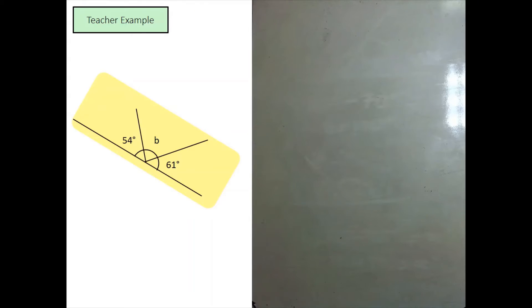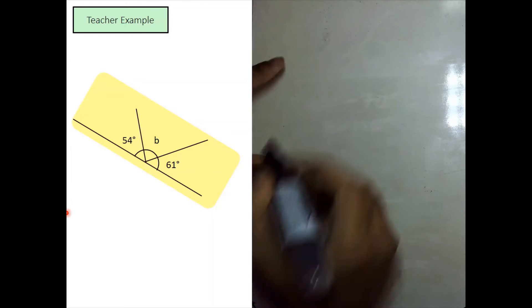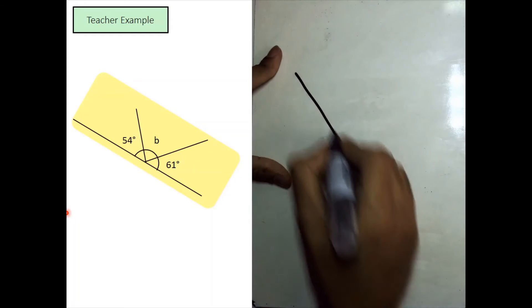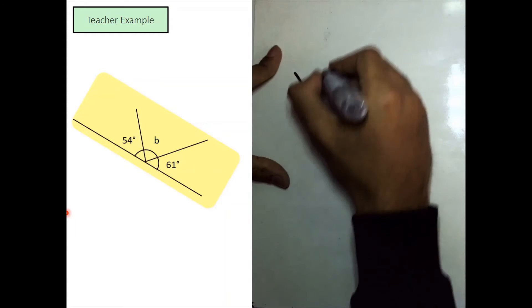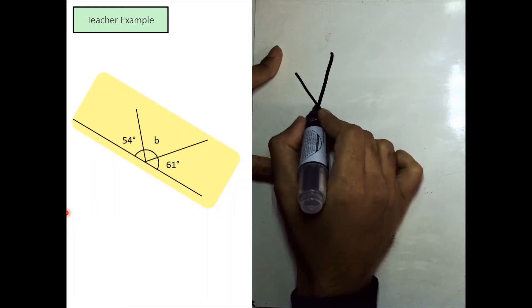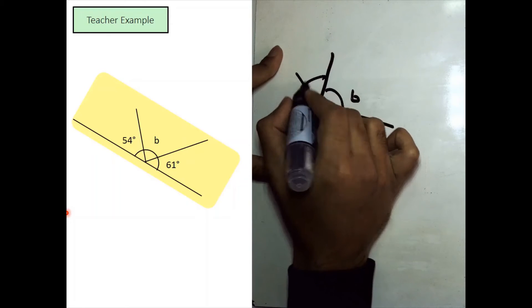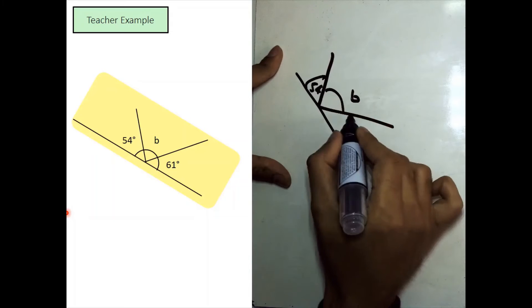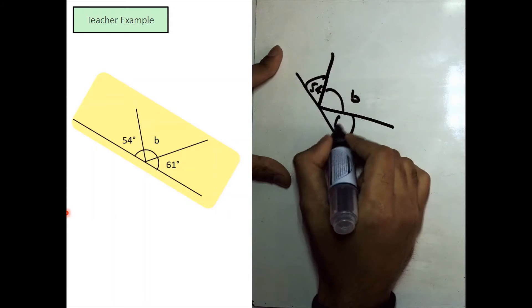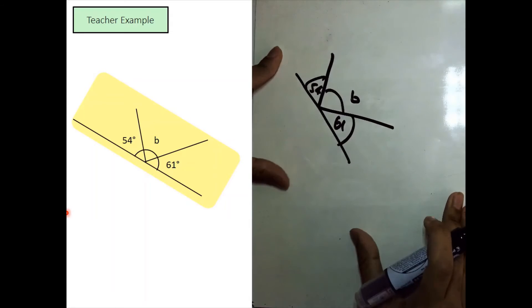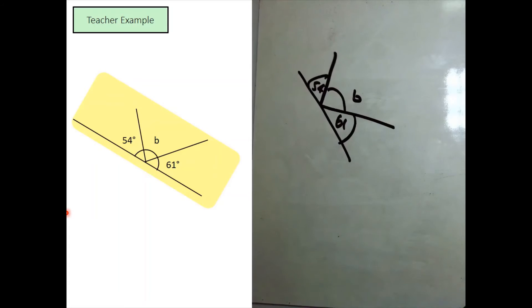So, looking at this example over here now, this one's a bit trickier. What we have is, we have an angle over here, but we also have an angle over here as well. So, if we were to call this one B, which is what we want to work out, this is 54 and this over here is 61. We want to work out what B is equal to. How can we work out what B is equal to? Well, think about it the same way again.